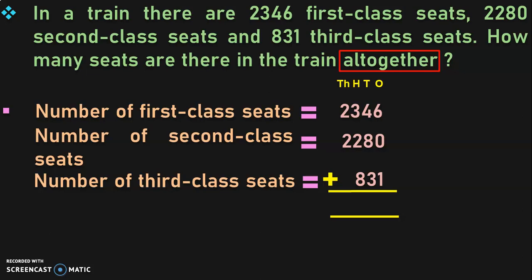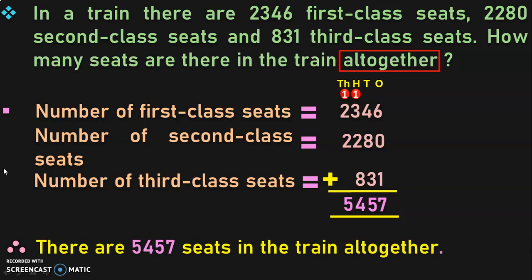Begin the addition from the ones place. 6 plus 0 is 6, and 6 plus 1 gives 7. Move on to the tens place: 4 plus 8 gives 12, and 12 plus 3 is 15 — retain 5 in the tens place and take 1 as a carryover to the hundreds place. Add the digits in the hundreds place: 1 plus 3 is 4, 4 plus 2 is 6, and 6 plus 8 gives 14 — retain 4 in the hundreds place and take 1 as a carryover to the thousands place. Add the digits in the thousands place: 1 plus 2 is 3, and 3 plus 2 is 5. Therefore, there are 5,457 seats in the train altogether.